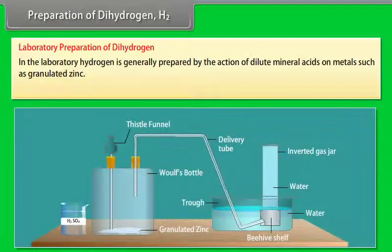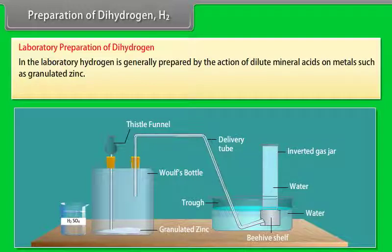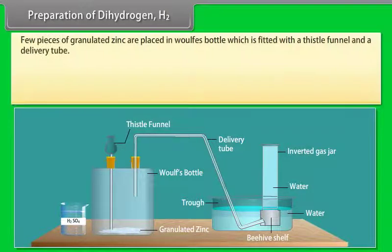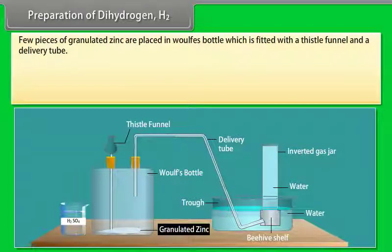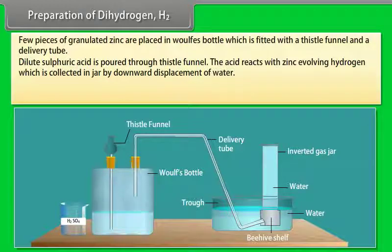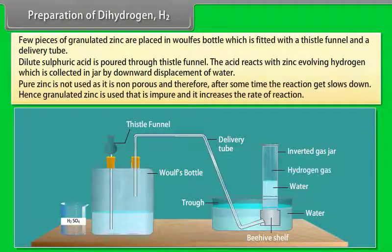In the laboratory, hydrogen is generally prepared by the action of dilute mineral acids on metals such as granulated zinc. Few pieces of granulated zinc are placed in a flask fitted with a thistle funnel and a delivery tube. Dilute sulphuric acid is poured through thistle funnel. The acid reacts with zinc, evolving hydrogen, which is collected in a jar by downward displacement of water. Pure zinc is not used as it is non-porous and therefore, after some time, the reaction slows down. Hence, granulated zinc is used that is impure and it increases the rate of reaction.